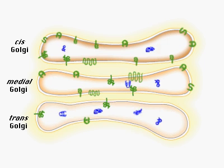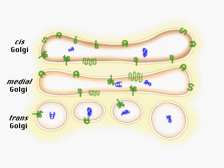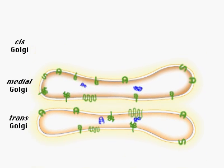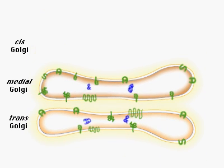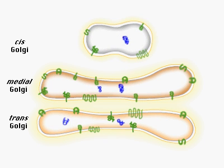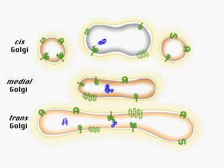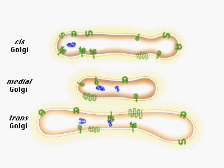In the cisternal maturation model, the cis Golgi matures to become the medial Golgi. A new cis Golgi is formed by fusion of ER vesicles. The maturation process includes retrograde vesicular transport of resident Golgi proteins.